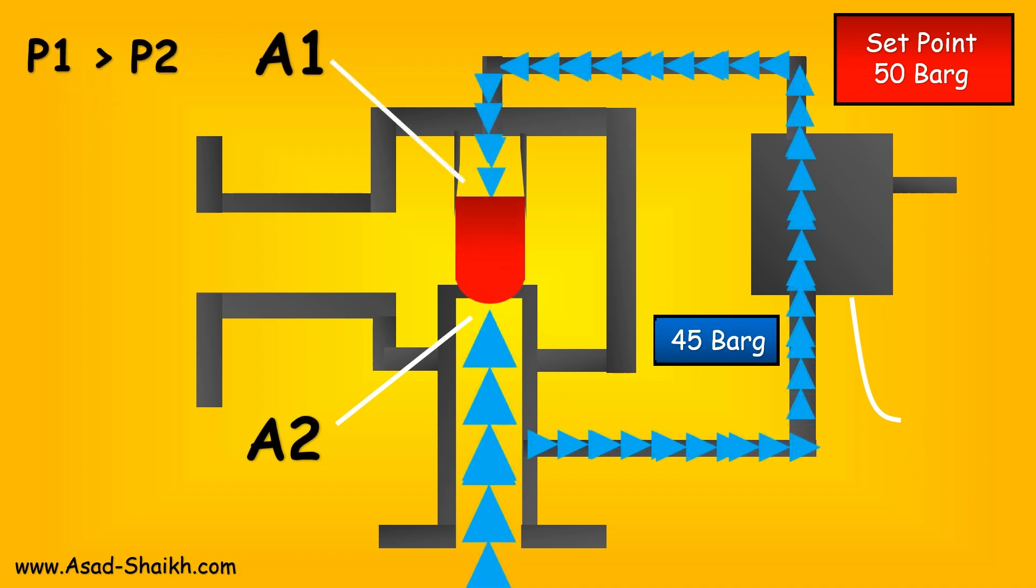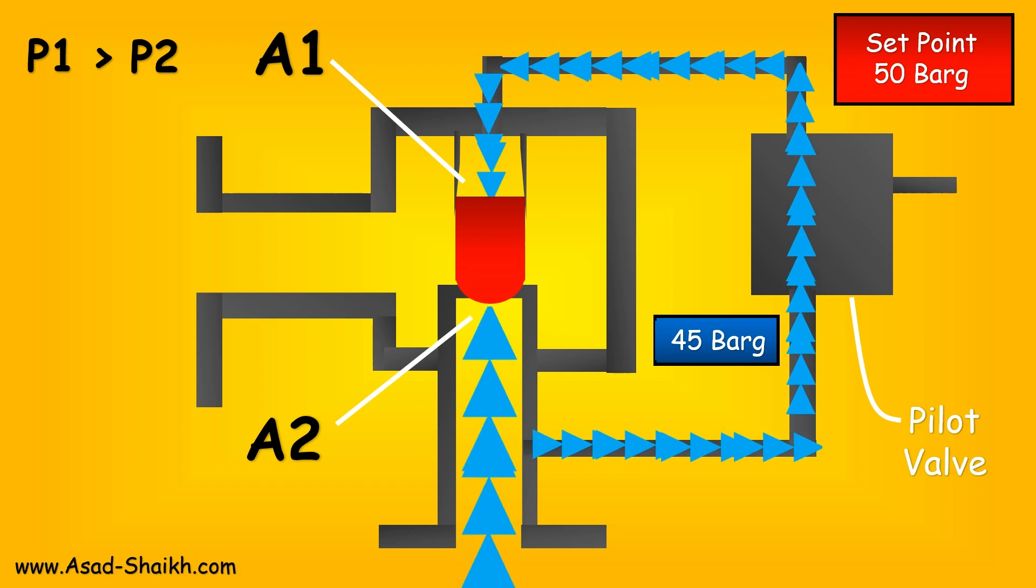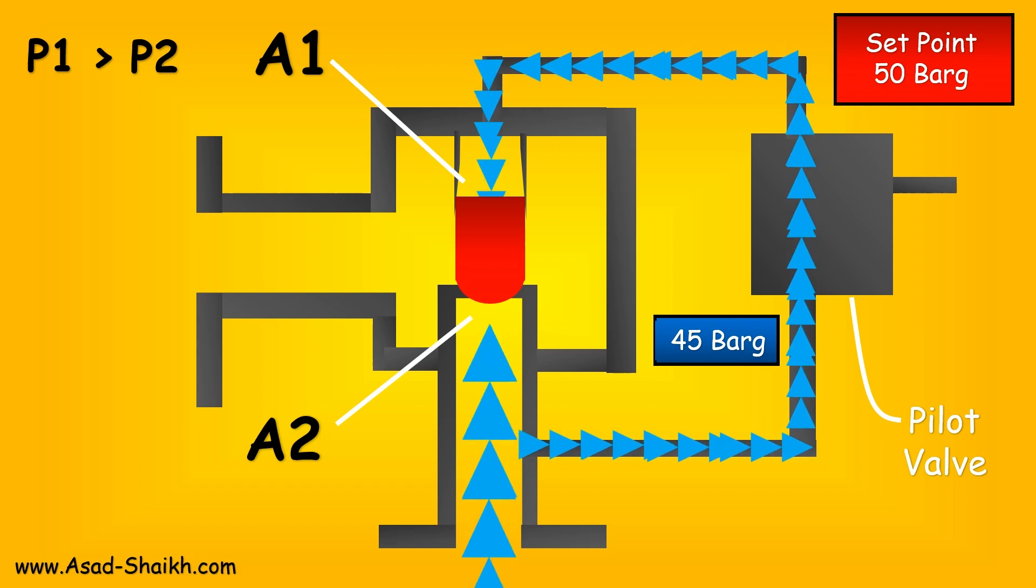This is going to allow the same pressure to go from the pilot to the inlet side. It is going to go to area A1, and if it goes to area A1, your pressure P1 is then going to be greater than your pressure P2. This is how your pilot relief valve gets back into its closed position again.